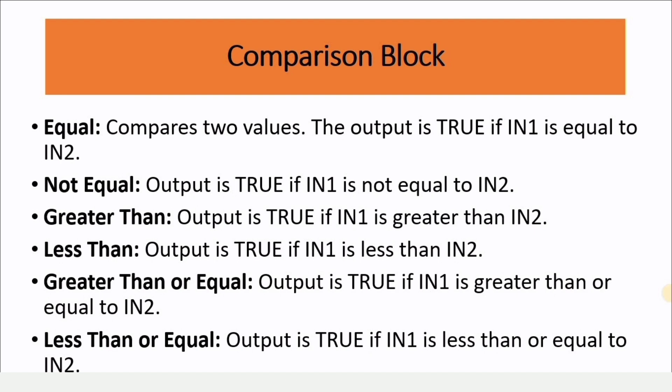In the comparison block, we will be learning about six instructions. The first one is Equal, which compares two values and returns true if both values are equal. Not Equal returns true if the two inputs are not equal. Greater Than outputs true if value one is greater than value two. Less Than outputs true if value one is less than value two. Then we have Greater Than or Equal, and similarly, Less Than or Equal.